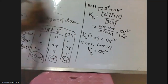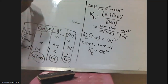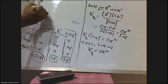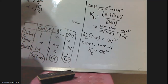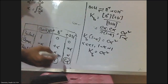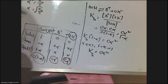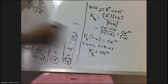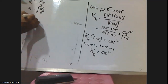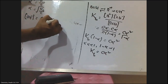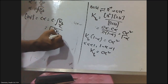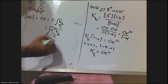From the ICE table, the concentration of OH⁻ is Cα. Substituting α = √(Kb/C), we get [OH⁻] = C × √(Kb/C) = √(C² × Kb/C) = √(Kb × C). Once we have the OH⁻ concentration, we can find POH = −log[OH⁻].